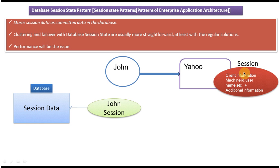As per the database session state design pattern, we have to save John's session information in the database. That is what this pattern is saying — store session data as committed data in the database. Once John logs in, a session is created and he performs many operations. Before he logs out, we save that information in the database so that when he visits the site again, we can retrieve and reuse it.